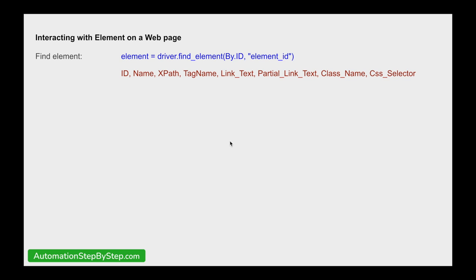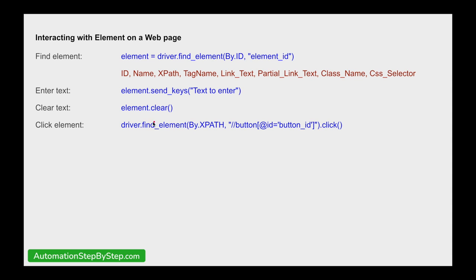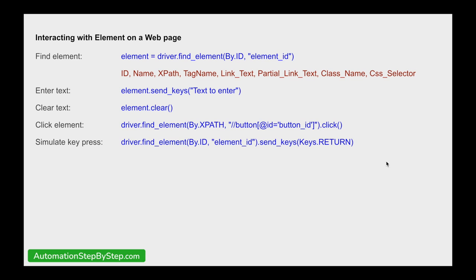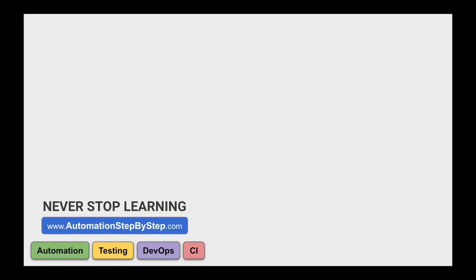We've seen options like find_element by ID, name, XPath, tag name, link text, partial link text, CSS selector, etc. We can also use .clear() to clear text in a textbox, and simulate keyboard keypresses with the Keys class. In coming sessions we'll see plugins and other ways to automatically generate locators. I hope this was useful — if you have questions, leave them in the comments. See you in the next session, thank you for watching and never stop learning.